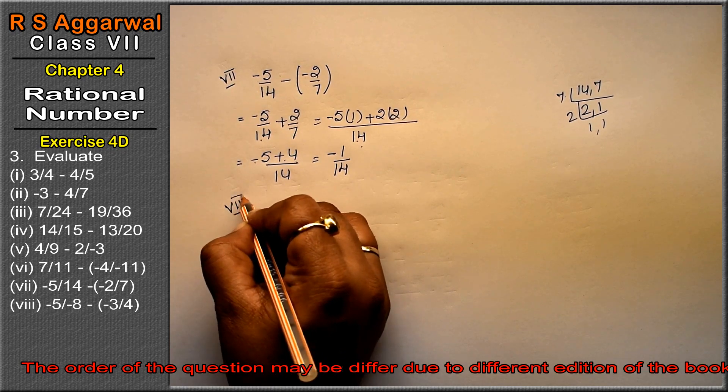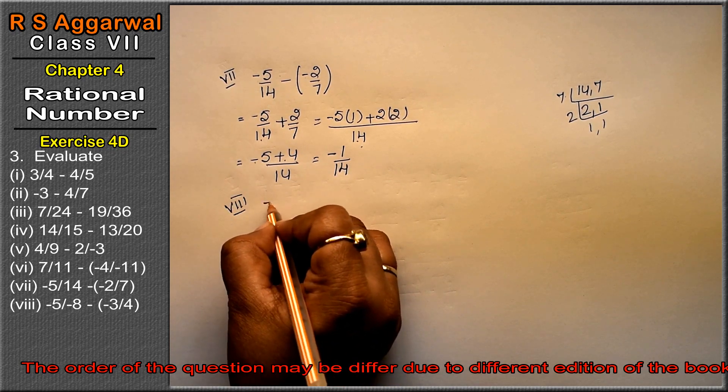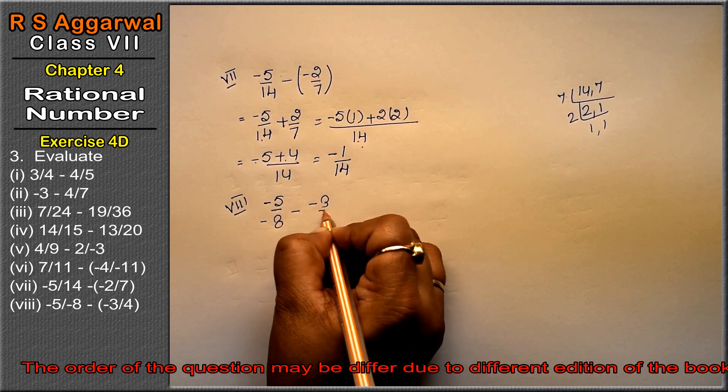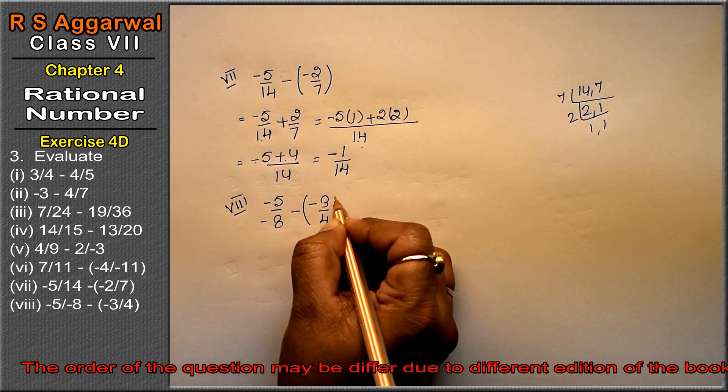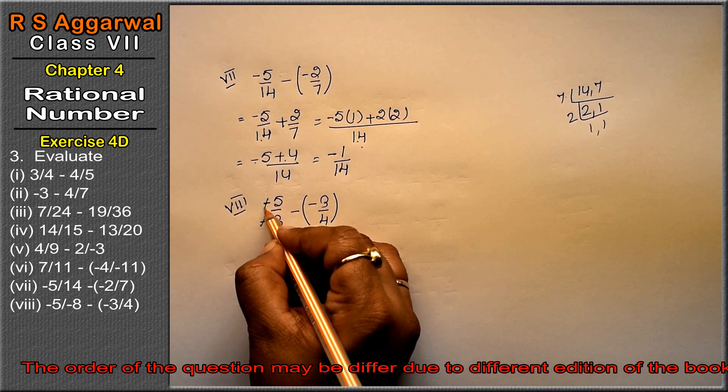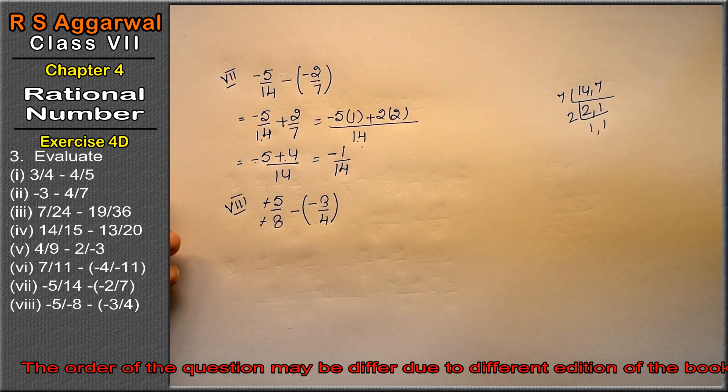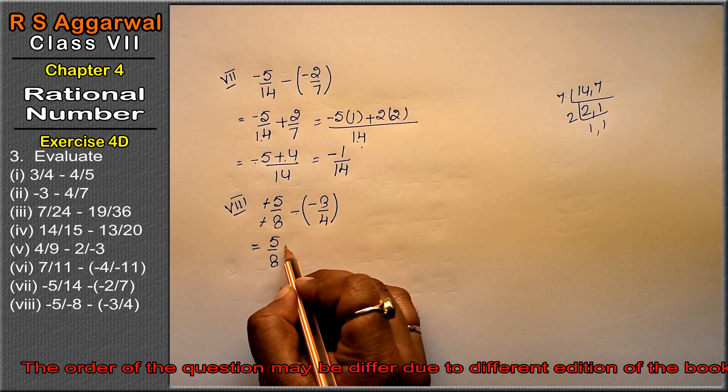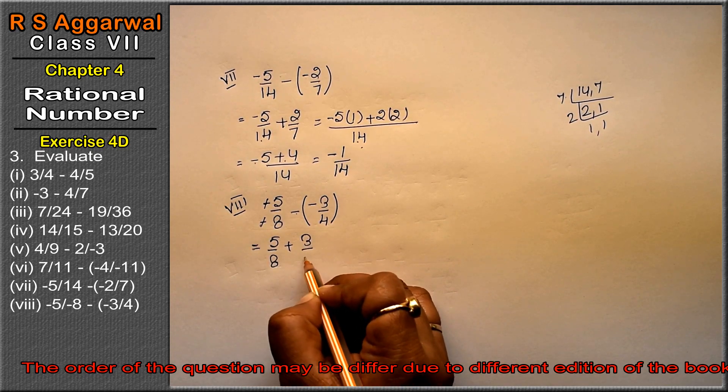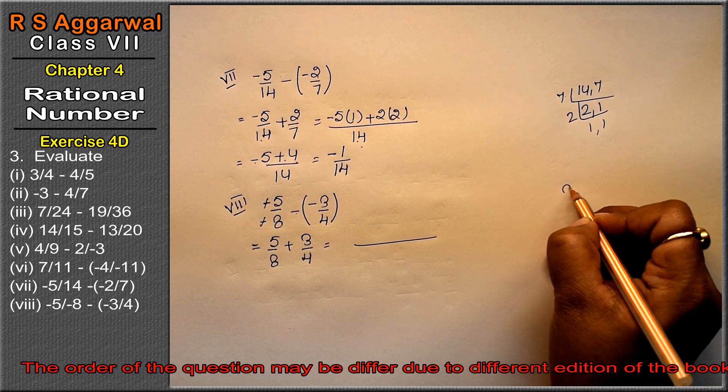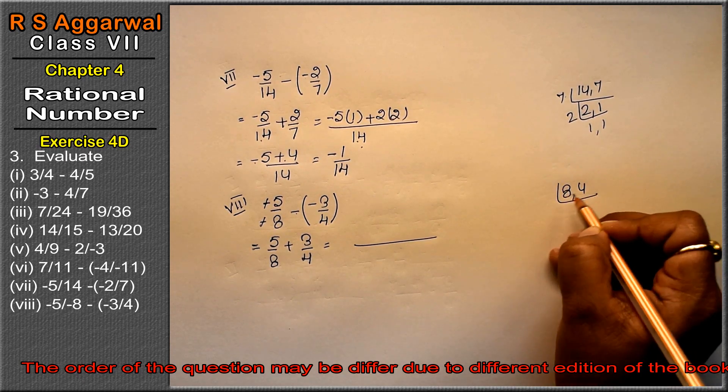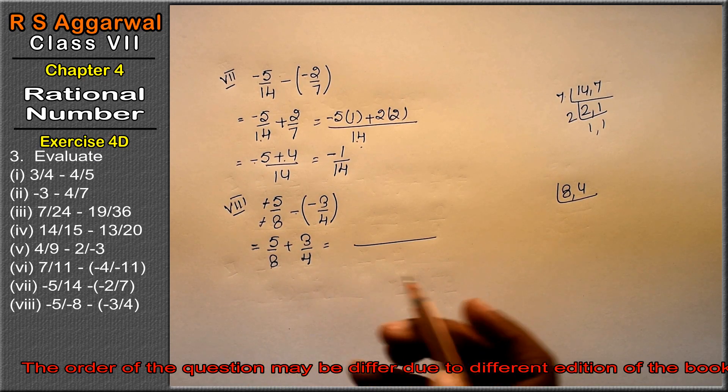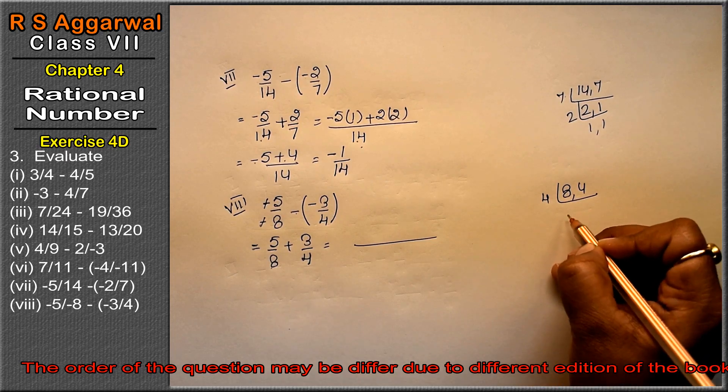Last part is minus 5 upon minus 8 minus negative 3 upon 4. First, the two minuses in minus 5 upon minus 8 cancel, making it positive 5 upon 8. Then minus negative becomes plus. So we have 5 upon 8 plus 3 upon 4. LCM of 8 and 4: 4 times 2 is 8, so LCM is 8.